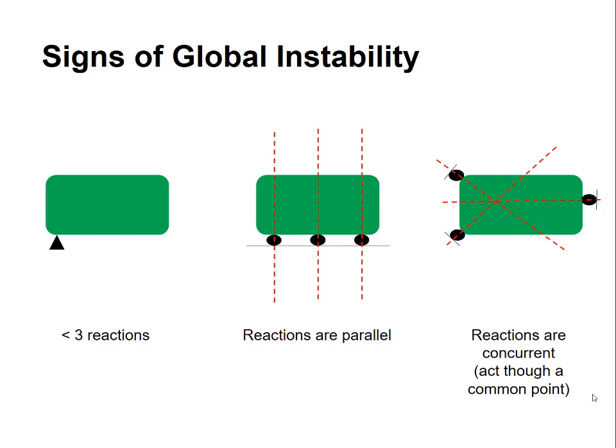The last example is the hardest to see. Here, I'm showing the structure supported by three rollers and I'm showing the lines of action of those three rollers. And what's crucial here is that the lines of action all meet at a common point. In other words, the reactions are concurrent. In this case, the configuration of external reactions has no resistance to an externally applied moment. There's no resistance to rotation.